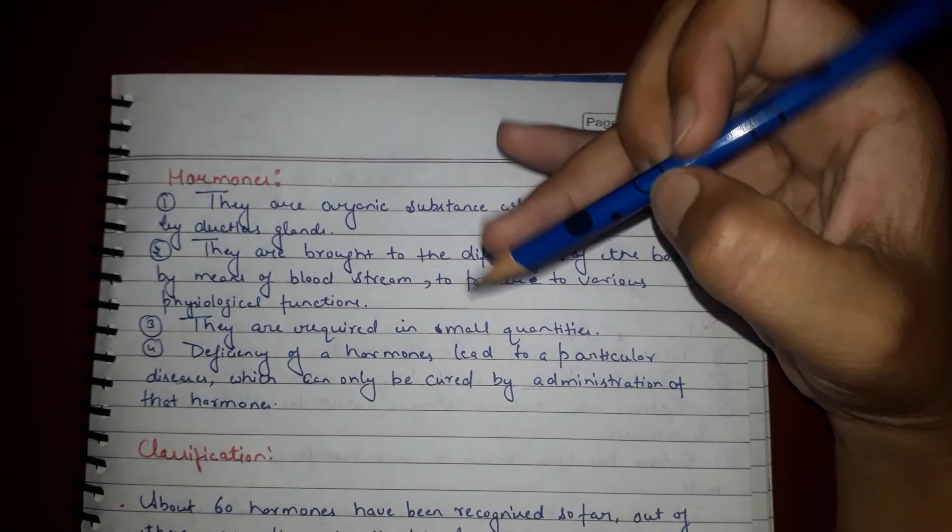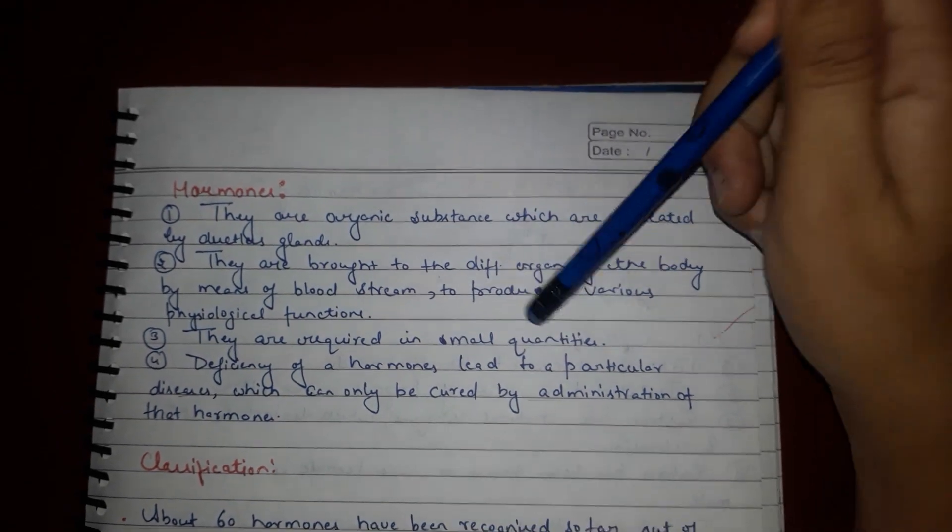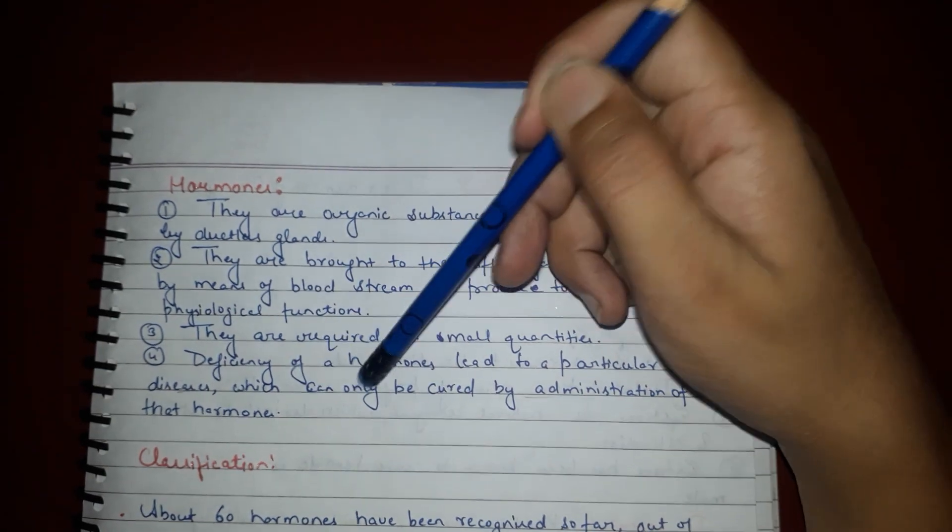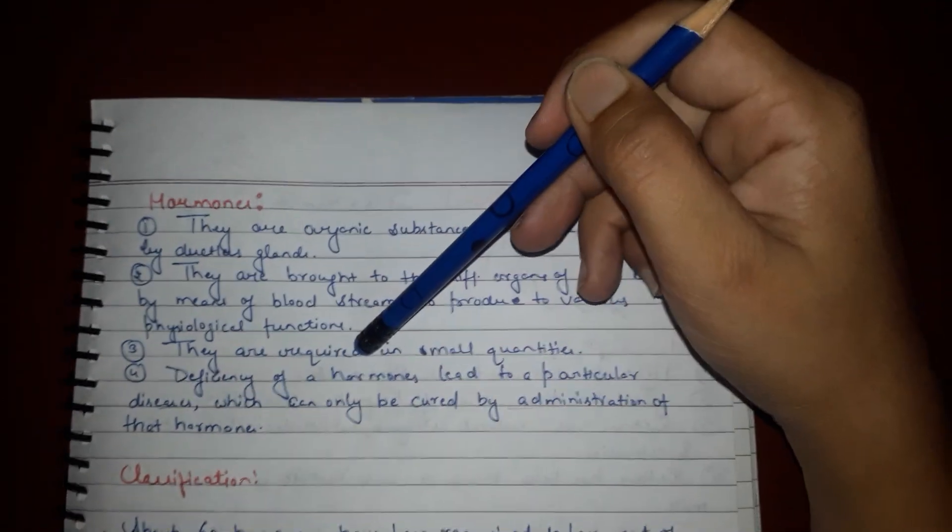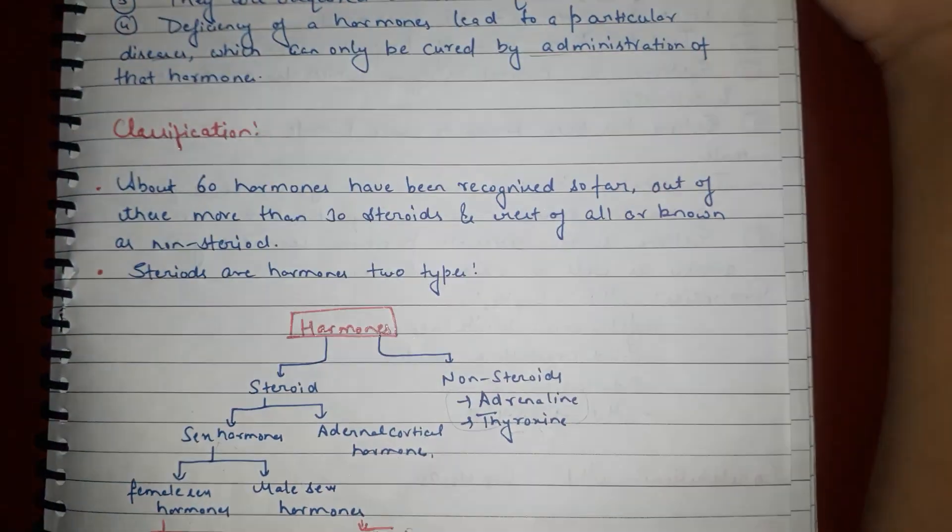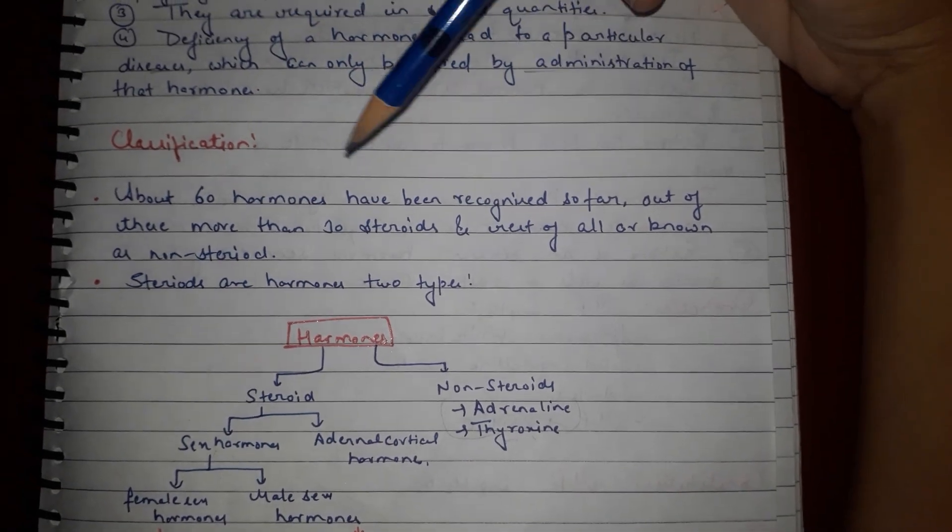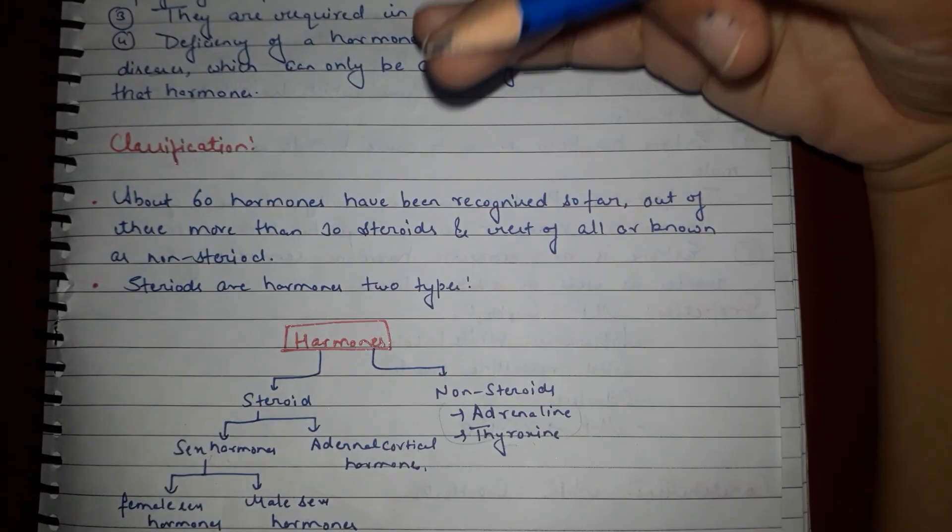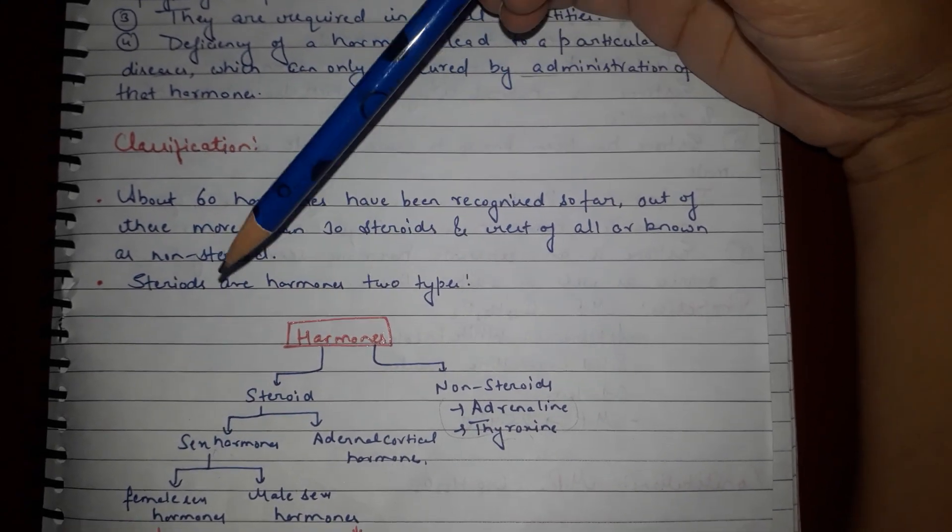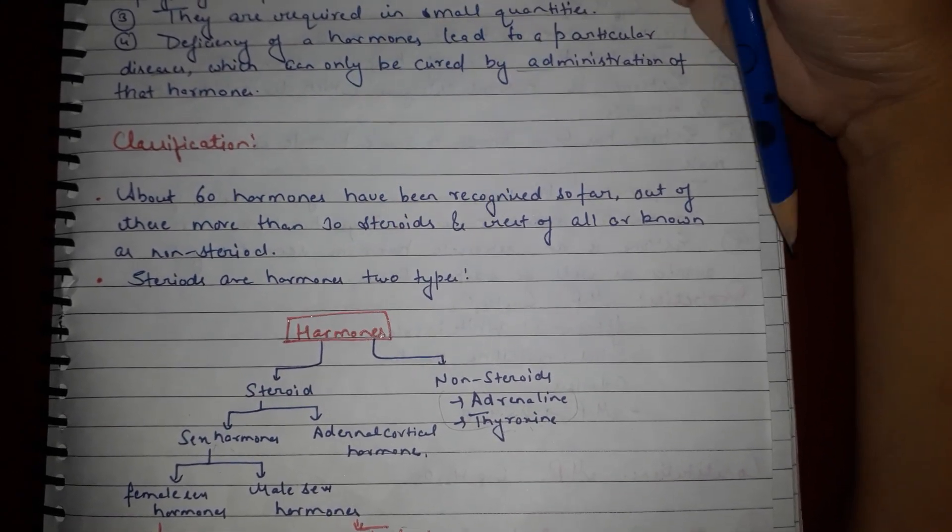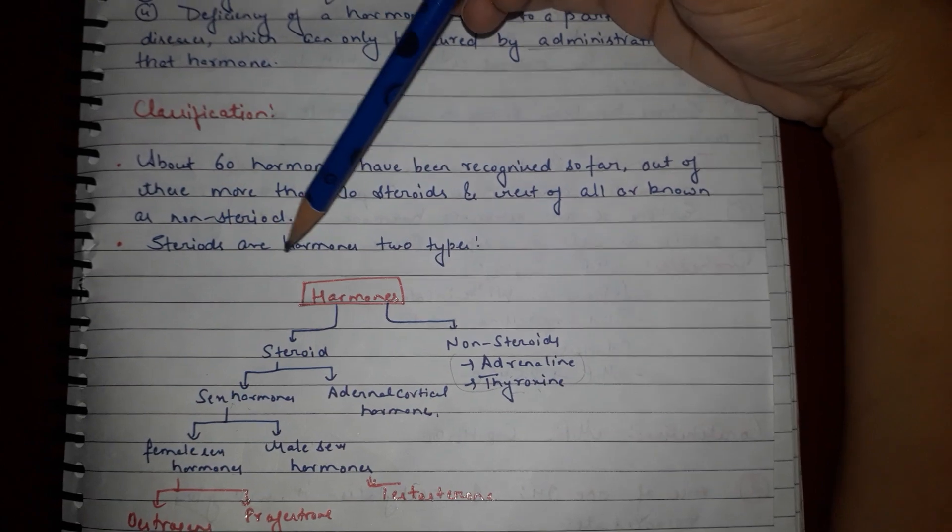Hormones are required in small quantities, and deficiency of hormones leads to particular diseases which can be corrected by administration of that hormone. For classification, generally 16 hormones have been discovered, in which some are steroids and some are non-steroids.